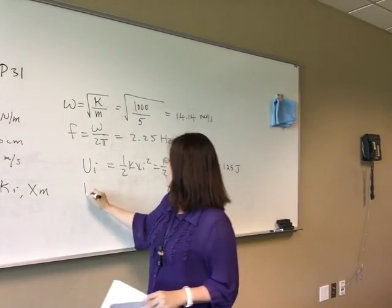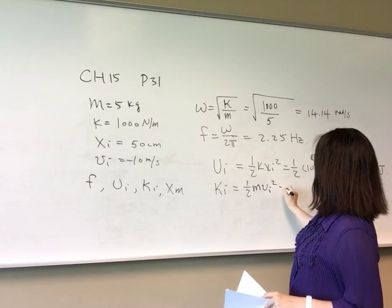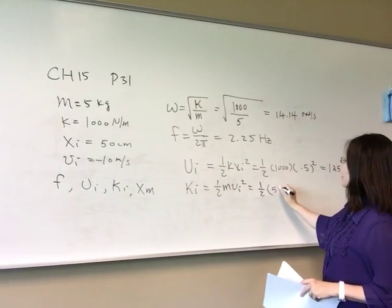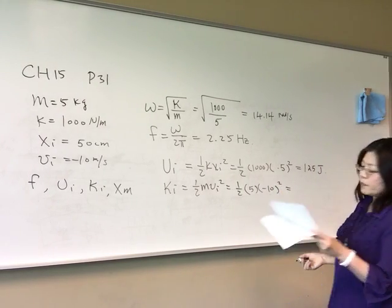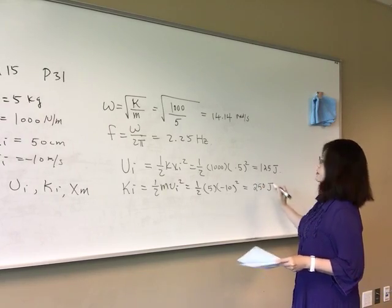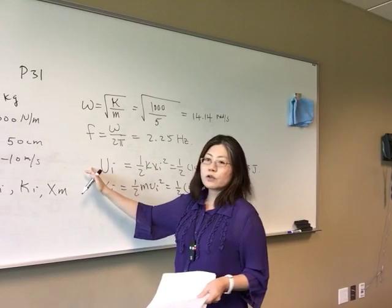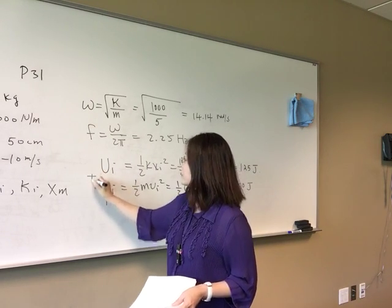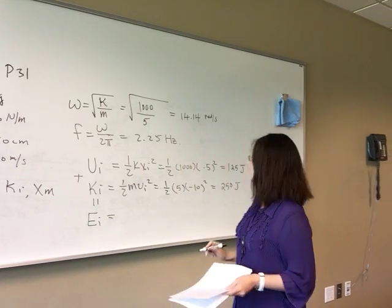Likewise, to calculate kinetic energy, we use one-half m vi squared. With m equal to 5 and velocity equal to negative 10, squaring that gives us 250 joules. Initially, the system has both spring potential energy and kinetic energy.